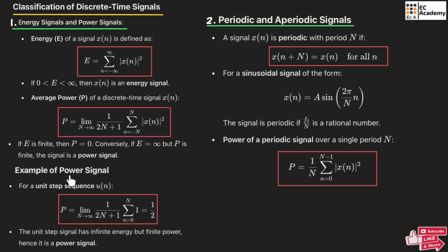Let us take an example of a power signal. For a unit step sequence u of n, let us find the power of the signal. We consider the power formula and replace x of n with u of n. We know u of n has the value 1 for n greater than or equal to 0, and 0 for other values of n. So in this formula, we substitute n from 0 to N.